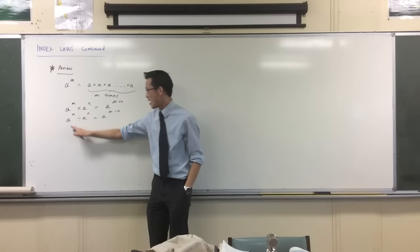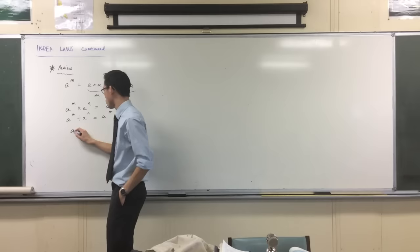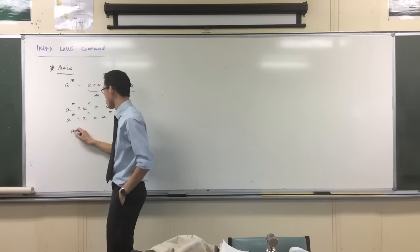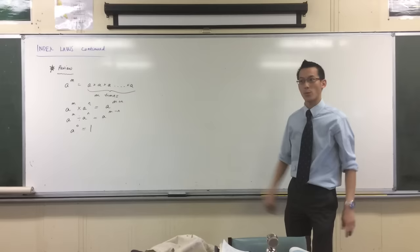And then one of the most important things we developed was, if these two numbers are the same, m and m, A to the m divided by A to the m, you get A to the power of 0. But then we said, well, that must be 1. That was the last law, if you like, that we established.